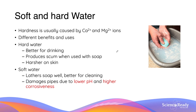Water can either be categorized as being soft or hard, and this is not in relation to the feel of the water. Hardness is usually caused by the presence of calcium and magnesium ions in water, while other metals such as sodium can also contribute, meaning softer water is water lacking in metal ions. Hard water is better for drinking but produces scum when used with soap and is harsher on the skin. Softer water is better to use with soap, but it can damage pipes due to its low pH and high corrosiveness.